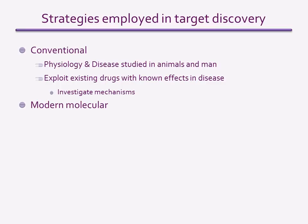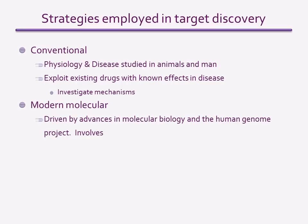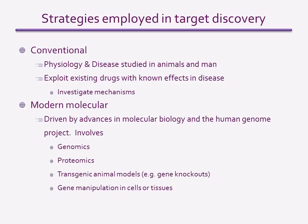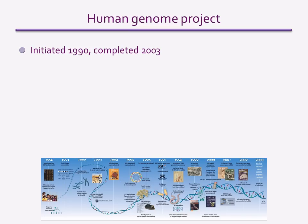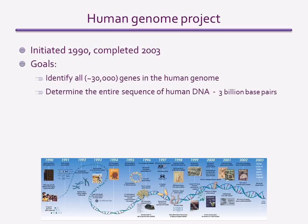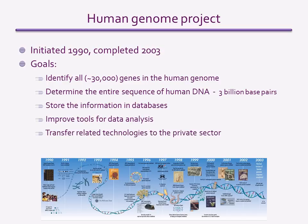The modern molecular approach now dominates target discovery programmes. It is driven by new knowledge of gene sequences and molecular technologies, which include genomics, proteomics, transgenic animals and gene manipulation in cells and tissues. The molecular technologies used today in target discovery were made possible by the Human Genome Project, which had sequenced the entire human genome by 2003 — a major milestone in the life sciences. Alongside DNA sequencing, the project had additional goals which led to the development of modern genomics, proteomics and informatics.